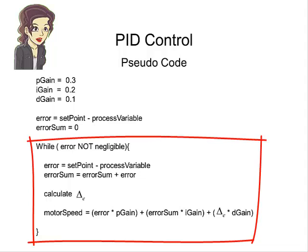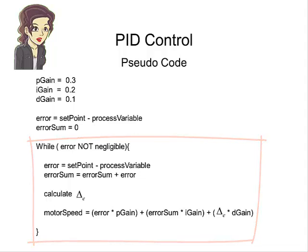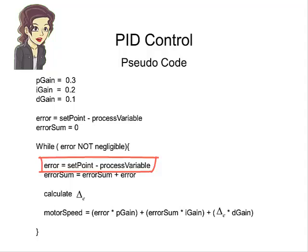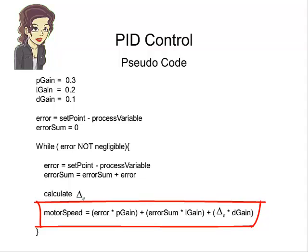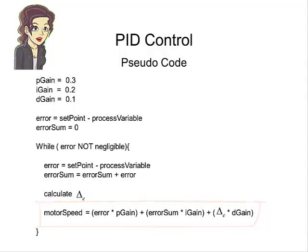Here is the main loop for the PID control. Once again, you calculate the error, and then you determine the sum, which is your integral value. Then, you calculate the change in the error, denoted by delta e. This is your derivative value. You determine the speed of the motor by using the equation shown here. You multiply the error by the p-gain, add that to the integral value times the i-gain, and add that to the derivative value times the d-gain.